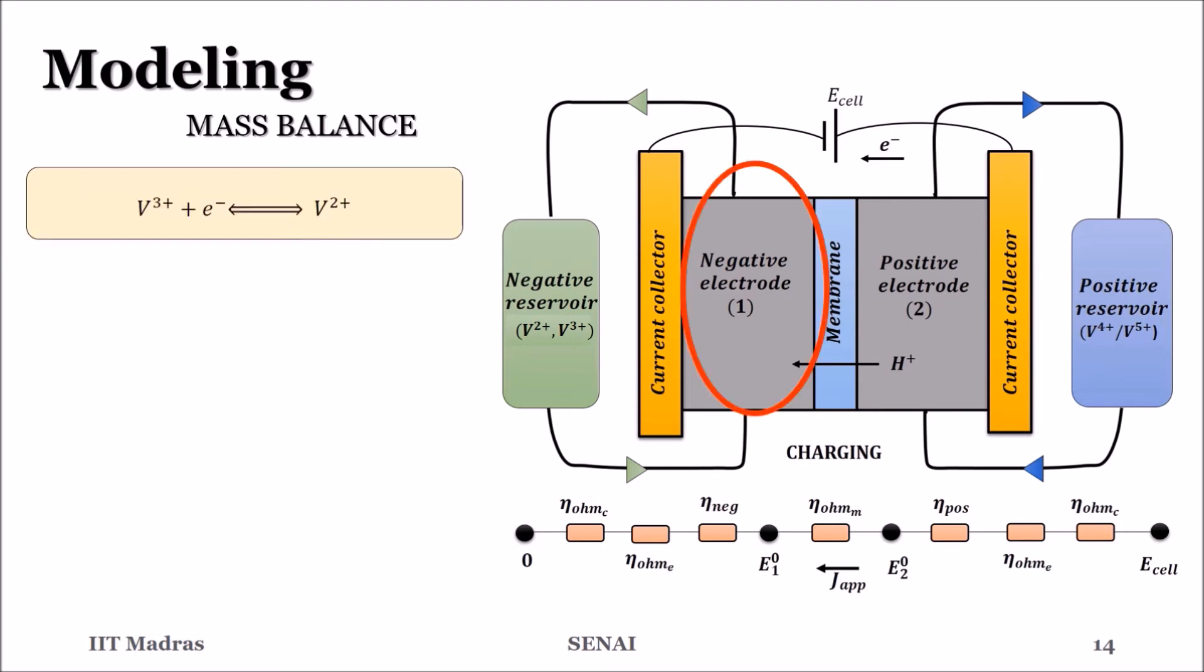Similarly, at the negative electrode during charging, V3 is converted to V2. In addition to the convection mixing, V3 is consumed, V2 is generated. The protons are neither generated nor consumed, but there is an inflow from the membrane.